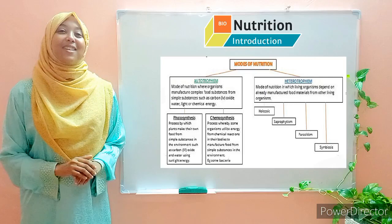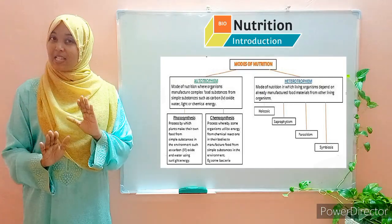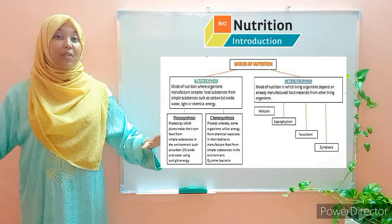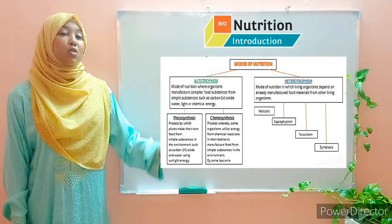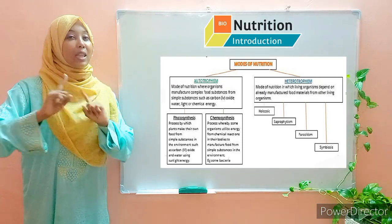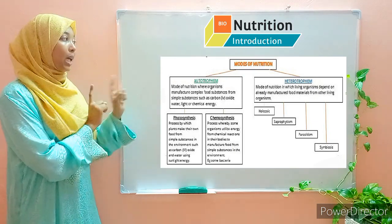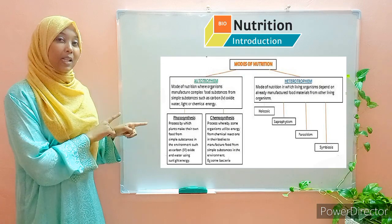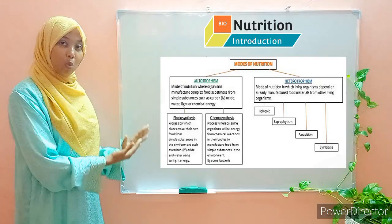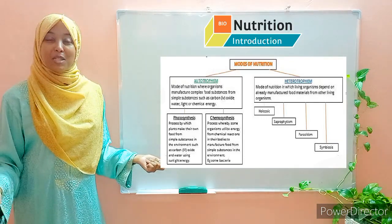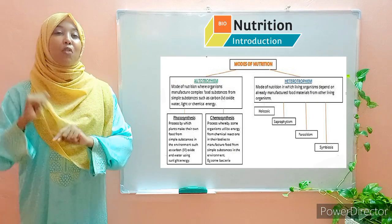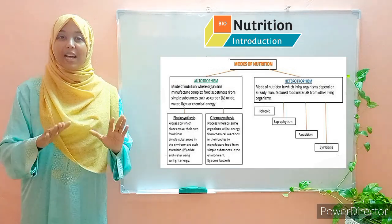Summary: organisms have different ways of obtaining their nutrients, termed mode of nutrition, broadly divided into autotrophism and heterotrophism. Autotrophism is for organisms that can manufacture their own food through either photosynthesis or chemosynthesis. Photosynthesis occurs in green plants and algae — they take carbon dioxide, combine it with water and light energy to produce food. Chemosynthesis occurs in some bacteria, which use energy from chemical reactions to manufacture food substances.